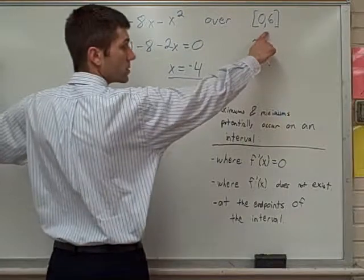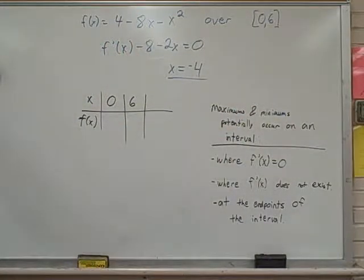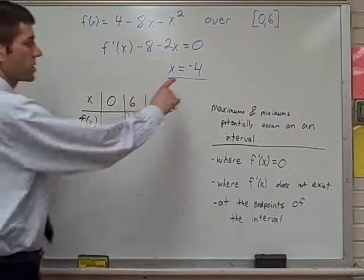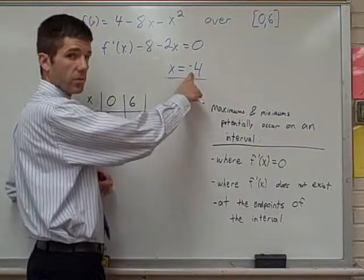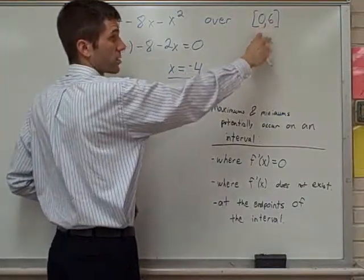Negative four is not in there. Negative four is not in that interval. So the potential maximum or minimum on the interval isn't even on the interval. So these are the only points we're going to test.